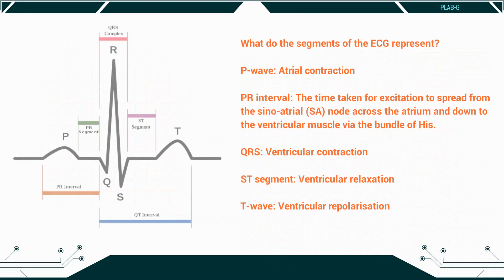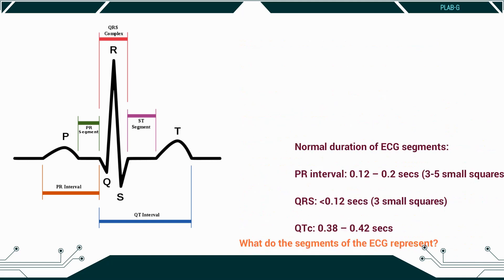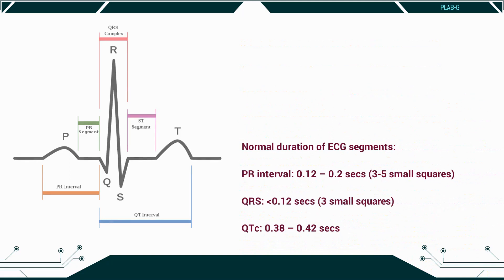Now we will see what the segments of the ECG represent. The P wave represents atrial contraction. The PR interval represents the time taken for excitation to spread from the sinoatrial node across the atrium and down to the ventricular muscle via the bundle of His. QRS represents ventricular contraction, ST segment represents ventricular relaxation, and T wave represents ventricular repolarization. These are the normal durations of ECG segments.